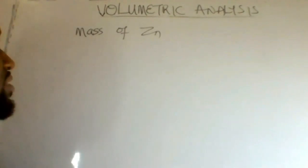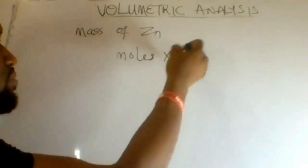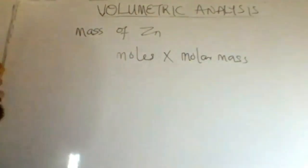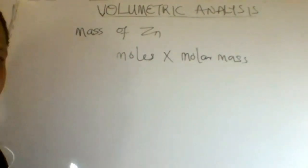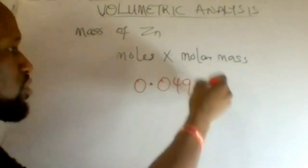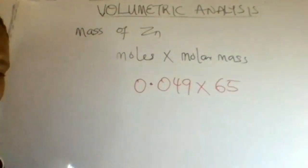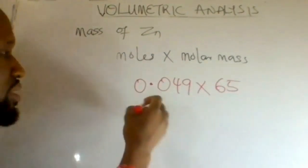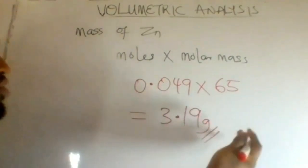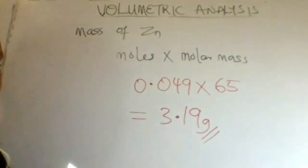The mass of zinc is number of moles multiplied by molar mass. The number of moles is 0.049, and the molar mass of zinc is 65. So 0.049 multiplied by 65 equals 3.19 grams. That is the mass of zinc added to the HCl at the beginning of the question.